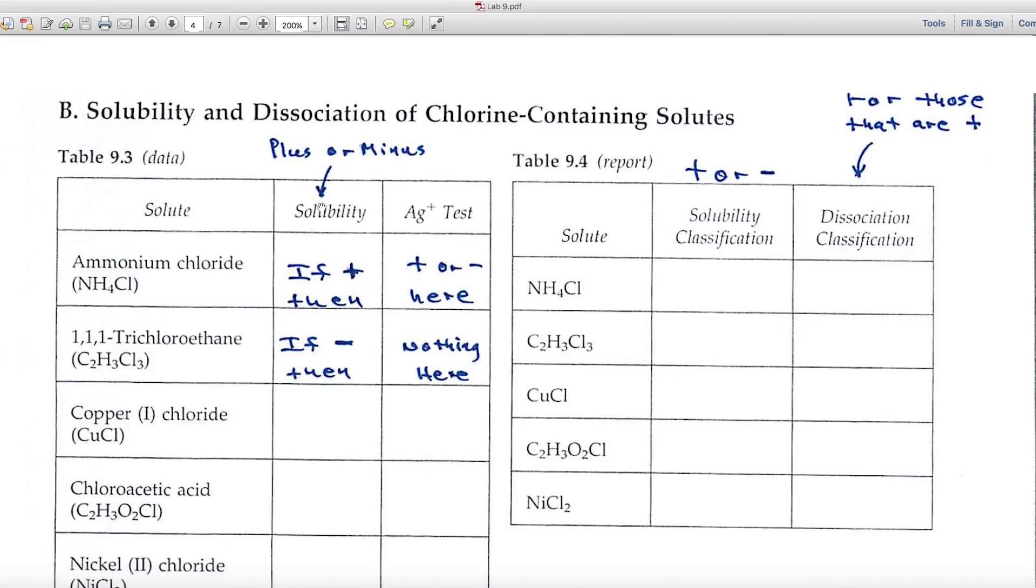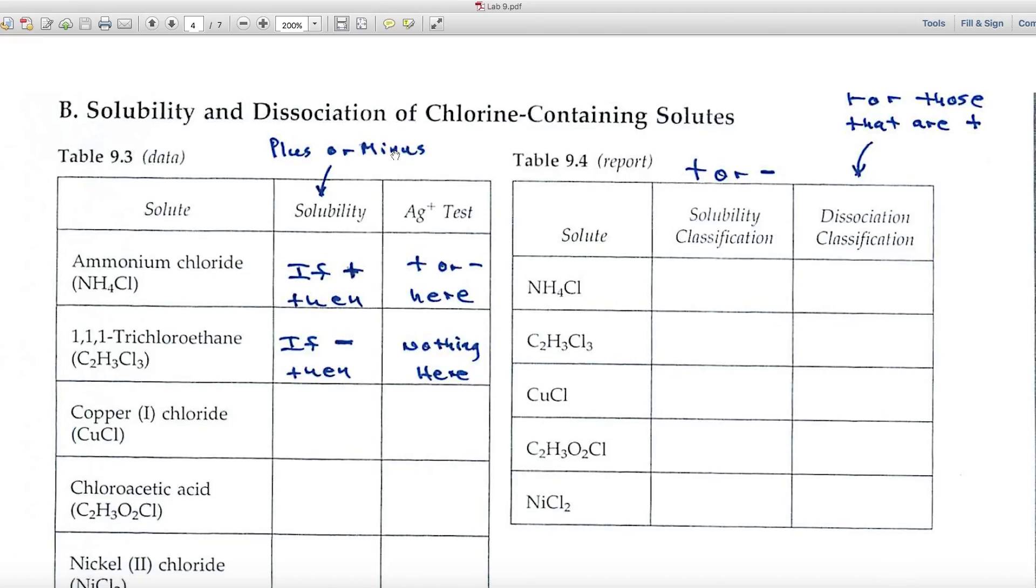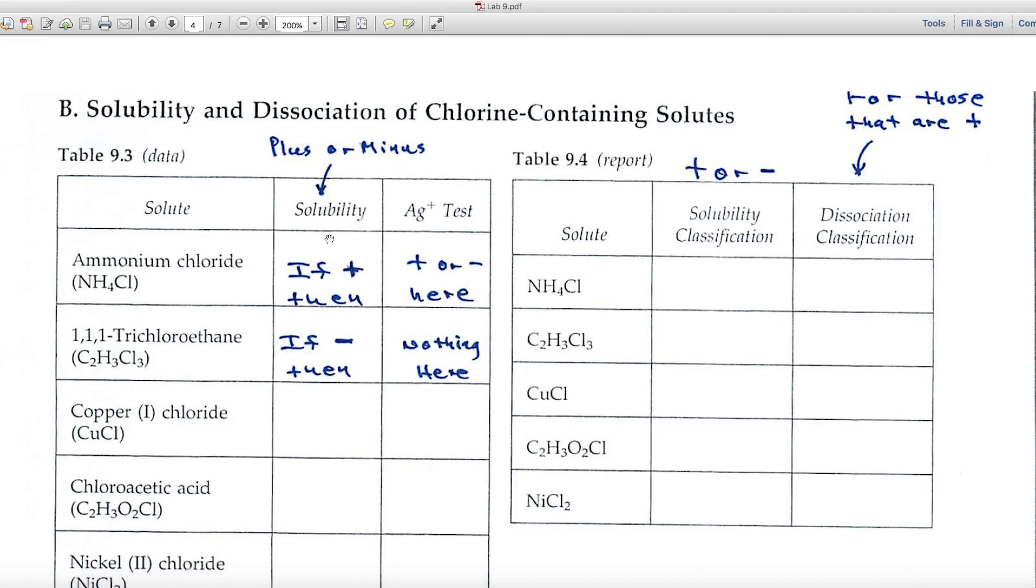And we'll be looking at their solubility. If it appears to dissolve, then you'd mark it with a plus. If it doesn't dissolve, you'd use a minus. And once again, look for solids on the bottom of the test tube. Or if it's a liquid, look for two layers. And if you see those, then it hasn't dissolved. If you just see a uniform solution, then it has dissolved.